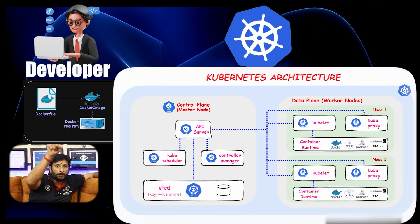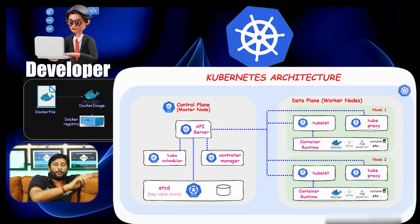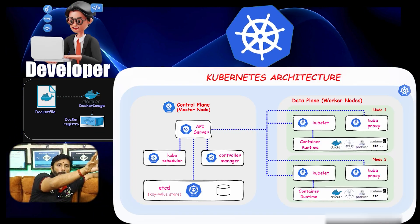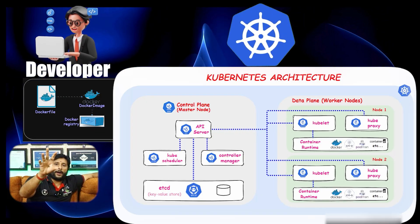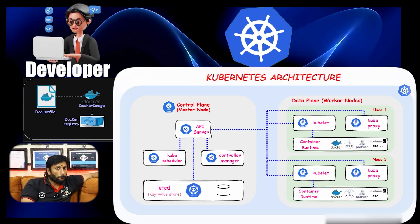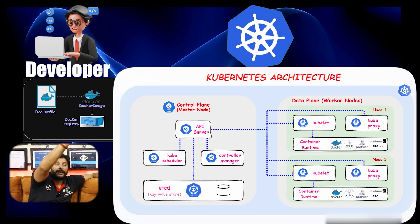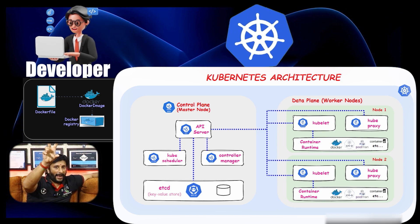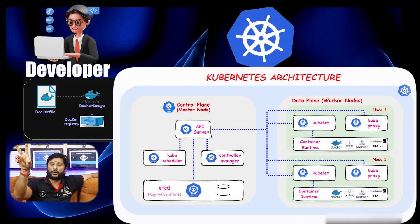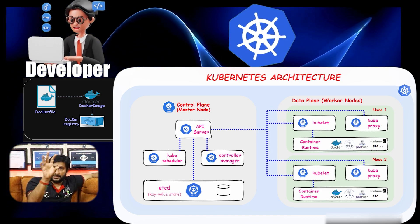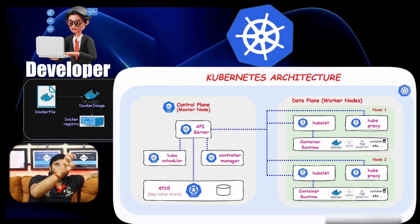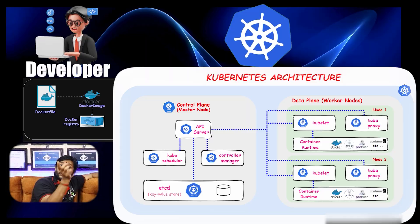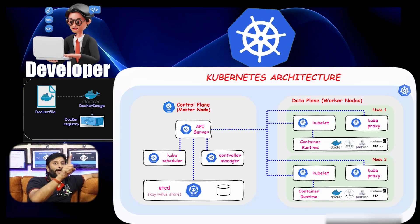There is a master node and worker node. You can use the master node and use the container to show up. You can use the worker node to create the pod. That project is a React front end, Node.js back end, and MongoDB. This is a container within a container, within a container. There is a project in Docker image.